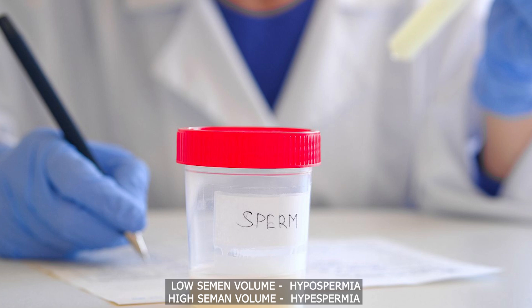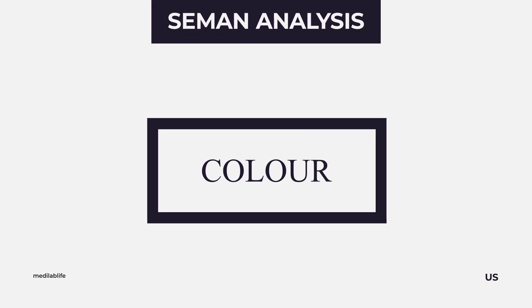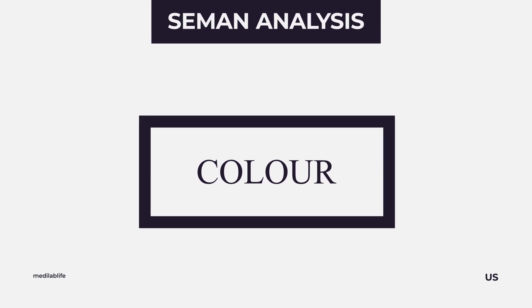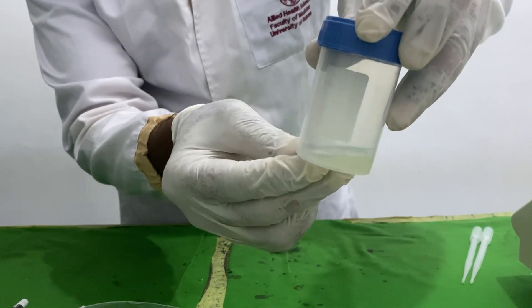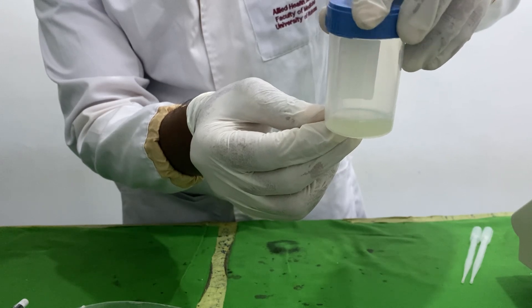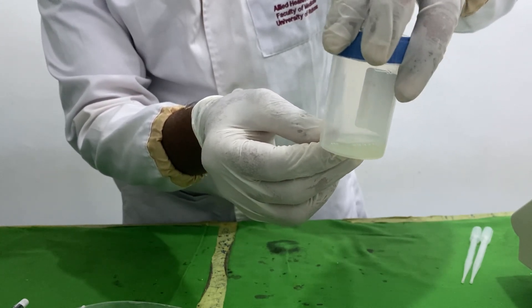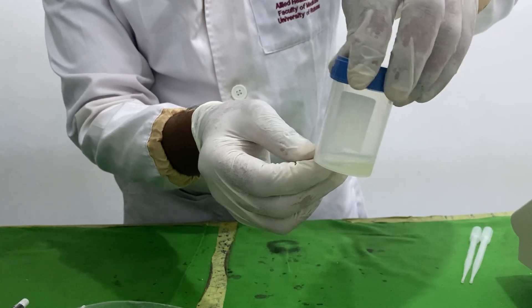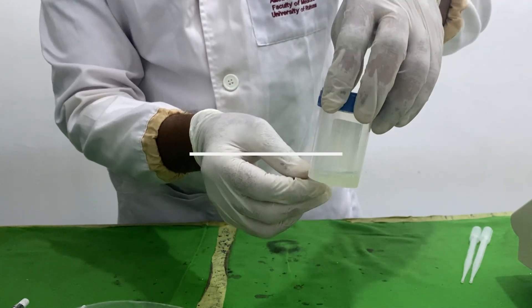Color: The normal color of human semen is white to grayish white. Semen color is influenced by diet, age, medication, and certain underlying medical conditions. Red to brownish semen color indicates the presence of blood — a condition called hematospermia — which could be a result of infection in the reproductive tract.